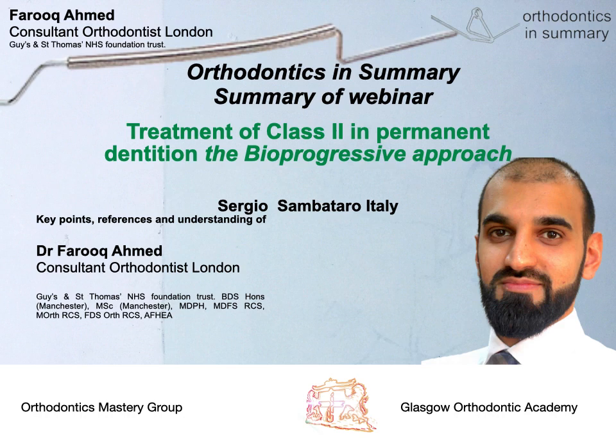How does this relate to treatment mechanics for the bioprogressive technique? The aim is to extrude the upper permanent molars, which relates to the etiology as described. This results in decompression of the condyle, and further vertical growth takes place in a compensatory direction. The mandible will carry on growing anteriorly until there's an occlusal interference, and that will stop this growth. So the idea of correcting the overbite prior to this compensatory unlocking occurring is key to the bioprogressive ideas.